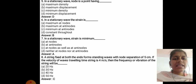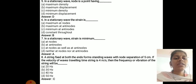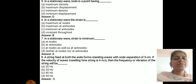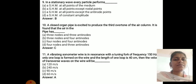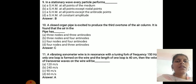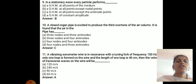In a stationary wave, the string is fixed at both ends with node separation of 5 cm and wave velocity 4 m/s; the frequency of vibration is 40 Hz. In a stationary wave, every particle (except at nodal points) performs simple harmonic motion.